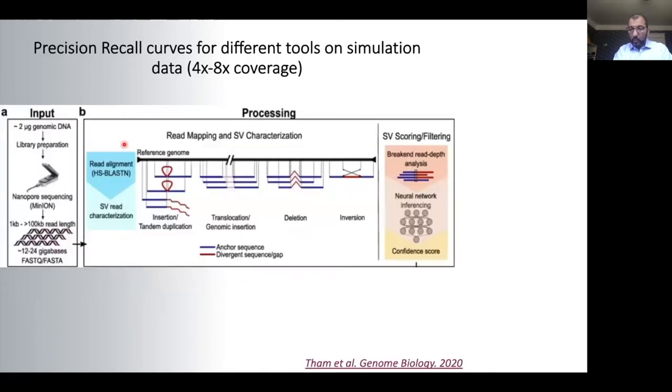To do so, we have developed a cost-efficient method to detect structural variants that are challenging to find with short-read sequencing technology. Our method is optimized for nanopore sequencing reads, and with two micrograms of genomic DNA, we are able to detect insertions, duplications, translocations, genomic insertions, deletions, and inversions.